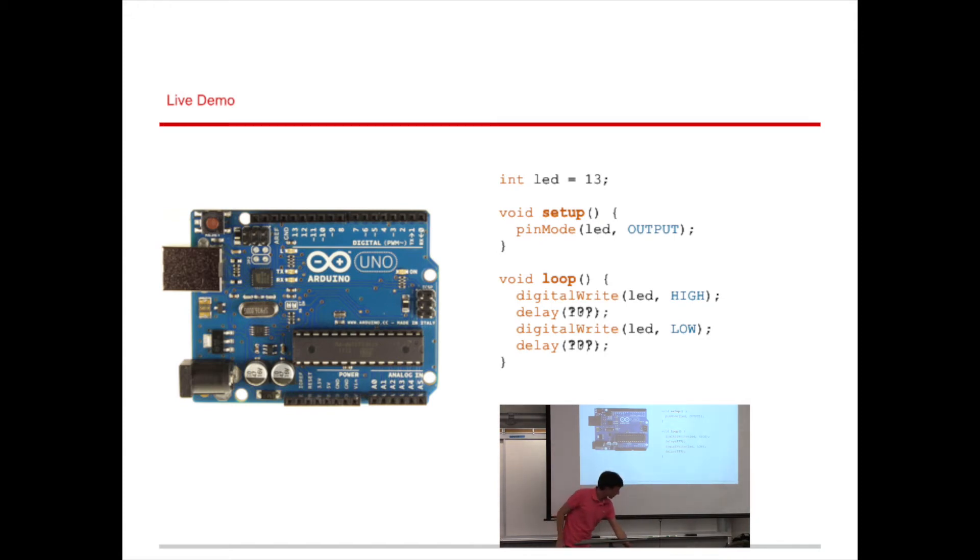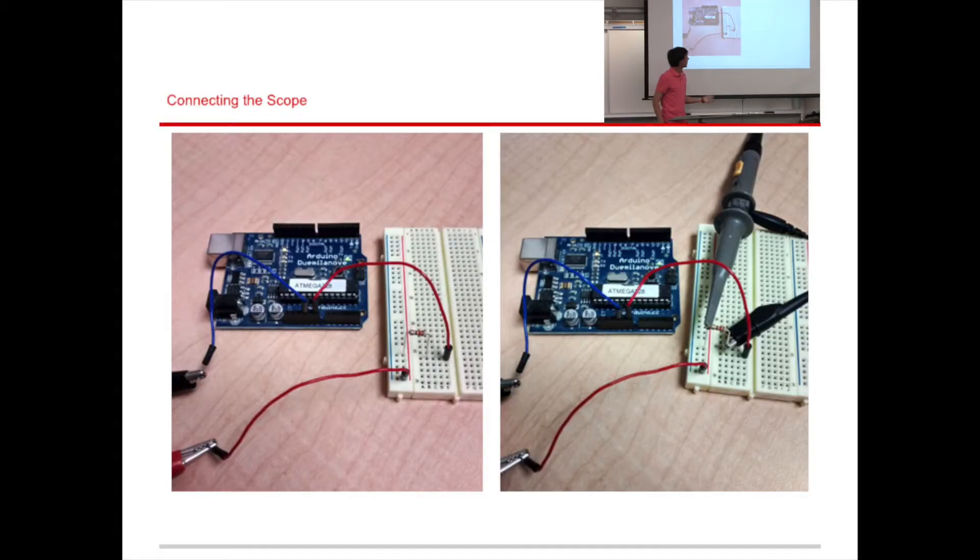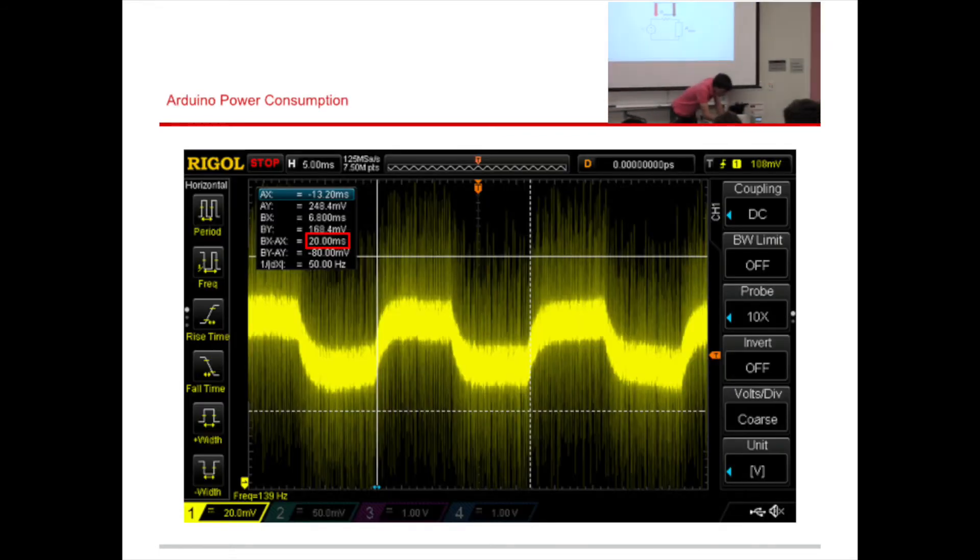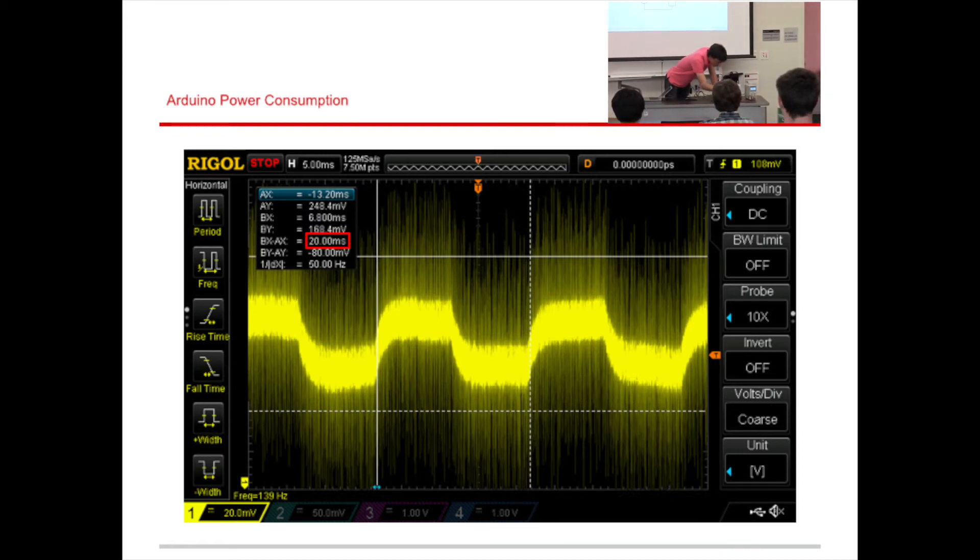And so in order to do that, we're going to connect a series resistor to the Arduino, just like we did before. And we're going to connect the oscilloscope probe across the resistor. So we have the series resistor, and we have the Arduino, and we have the oscilloscope across the series resistor, so let's do that now.